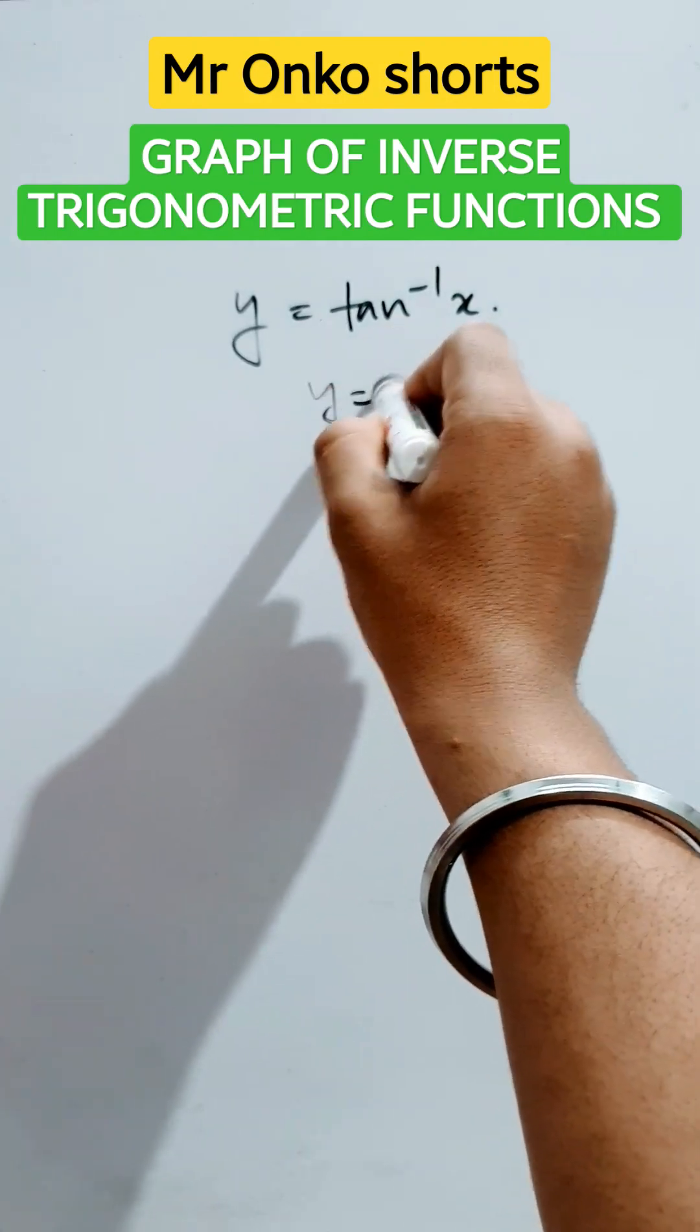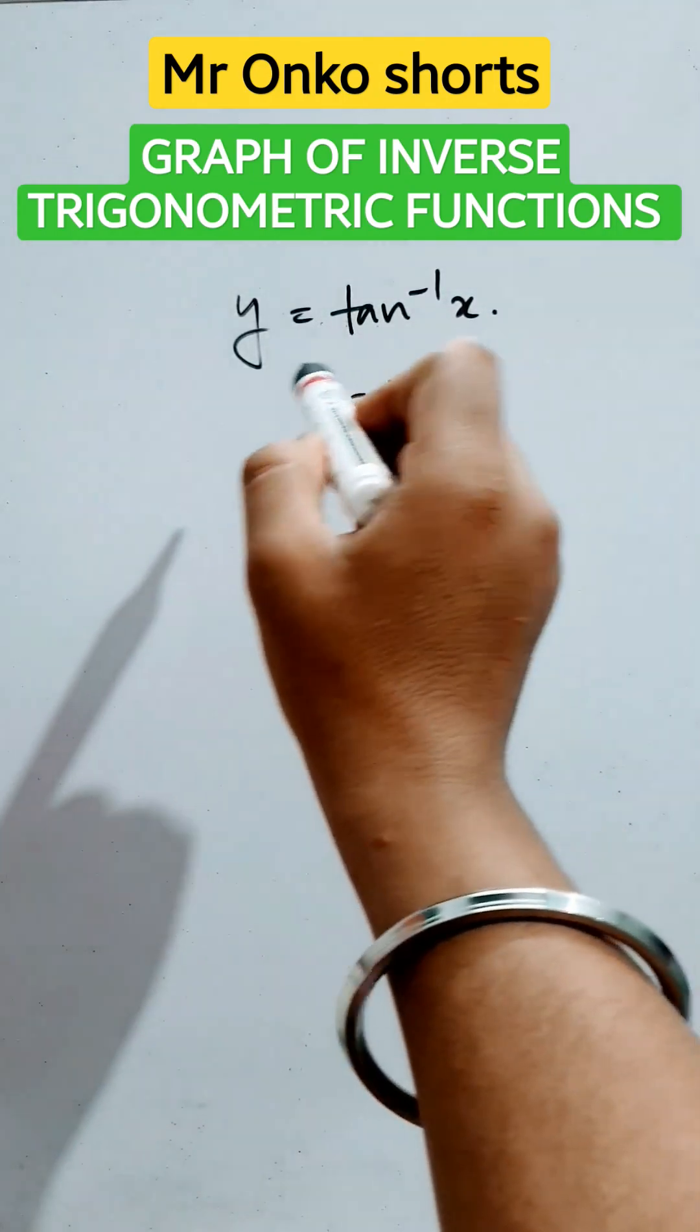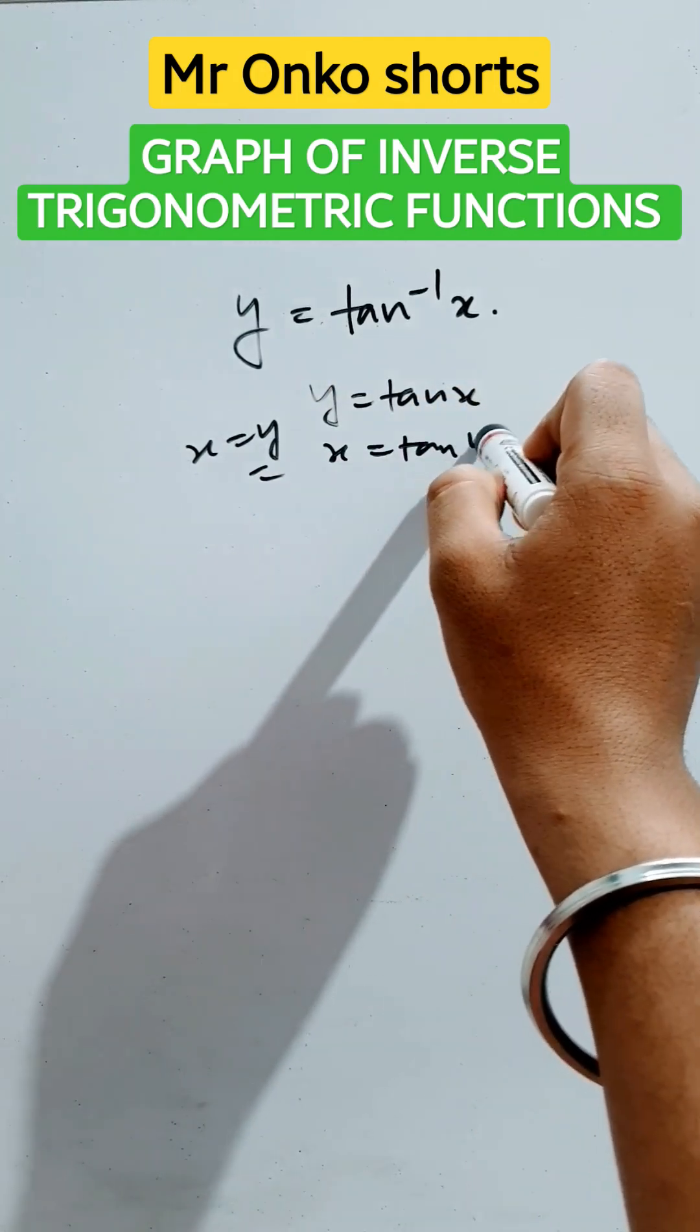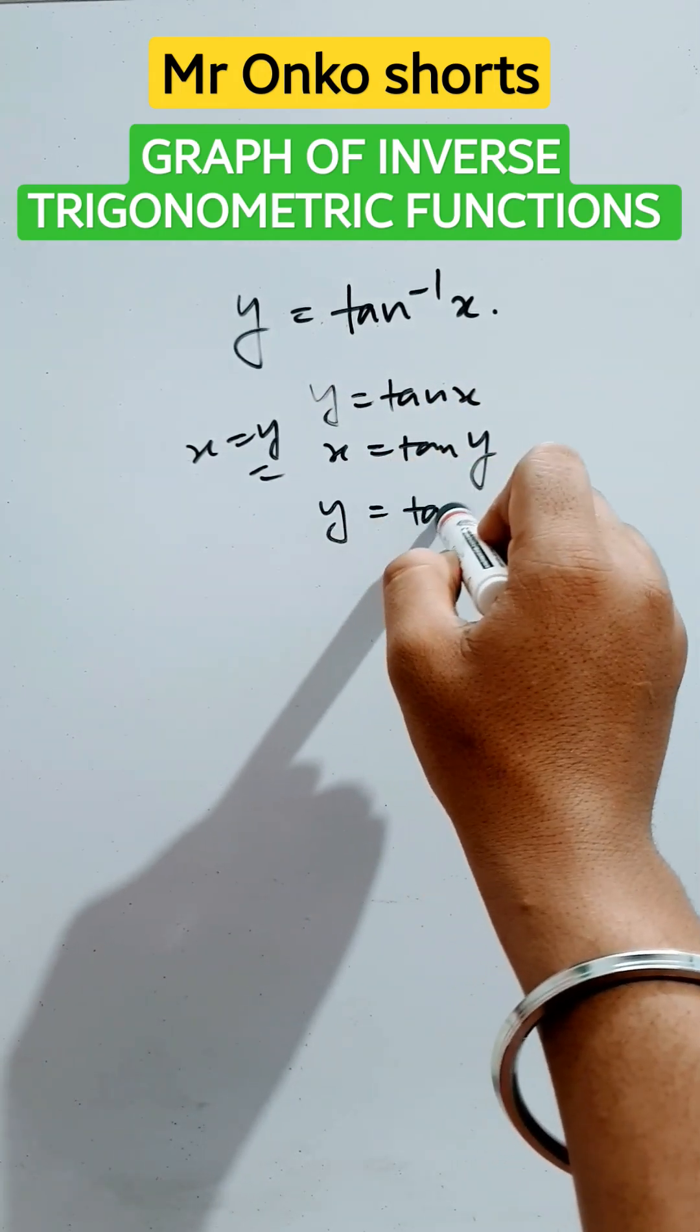First of all, we will write y equals tan x. Now, we will put x equals y. So it will be x equals tan y. So it will be y equals tan inverse x.